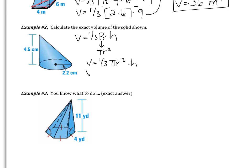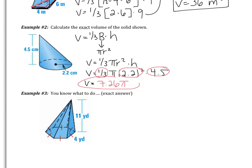Okay, let's see how we did. Volume equals one-third area of the base, which is pi, times 2.2 squared, times the height which is 4.5. In my calculator I'm going to do one-third times 2.2 squared times 4.5. When I do that, I get my answer to be 7.26 pi. This would be your exact answer, which is approximately 22.808 centimeters cubed.